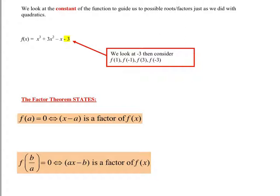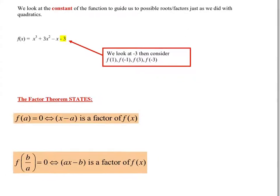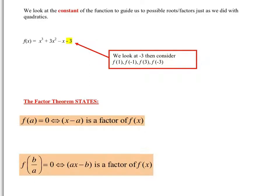What we do is look at the constant at the end of the function, and that hopefully will help us with roots and factors. It's fine if these factors are whole numbers, but if they're fractions then it doesn't help us at all, so there are a couple of methods we're going to have to look at. Looking at minus 3, that gives us a big clue — when we look at minus 3, we think of the factors minus 3 or plus 3, minus 1 or plus 1, and that gives us the four things we consider for factors. It's that number at the end that can help us.